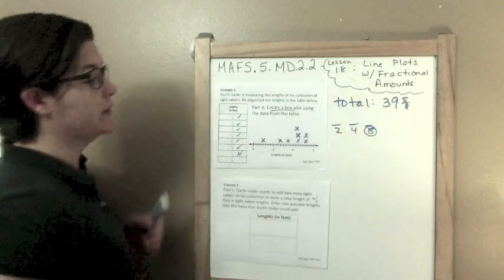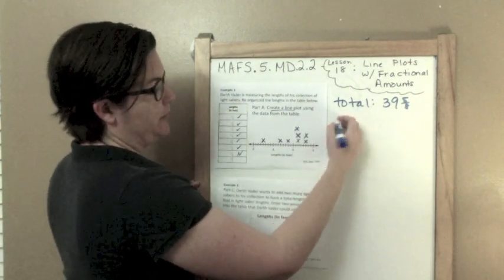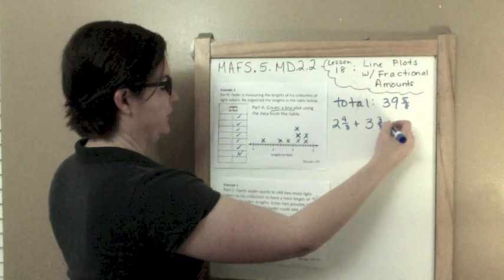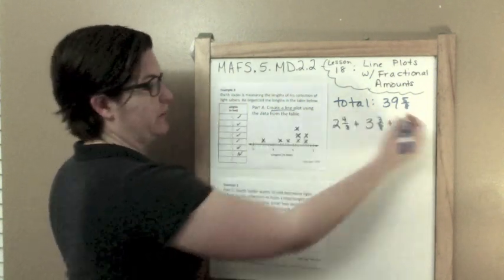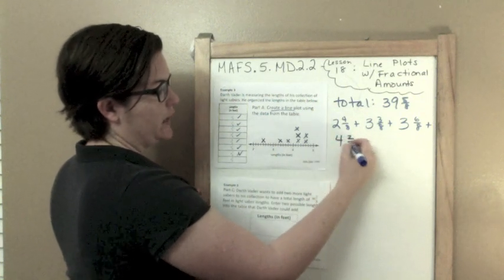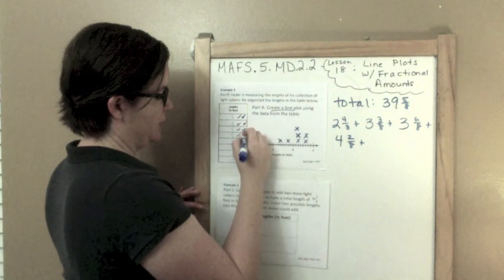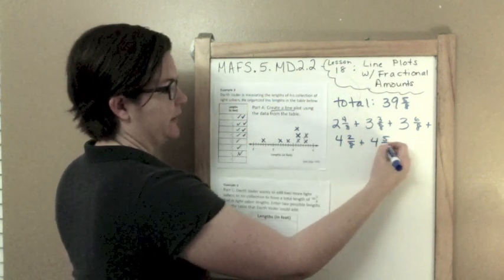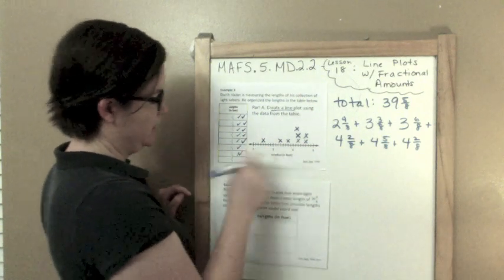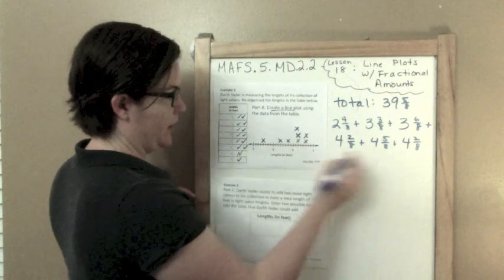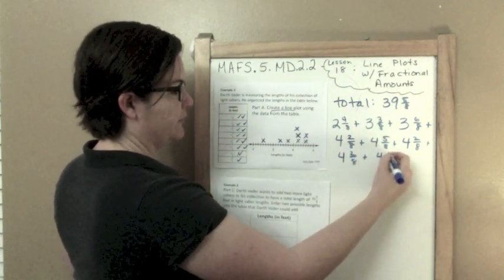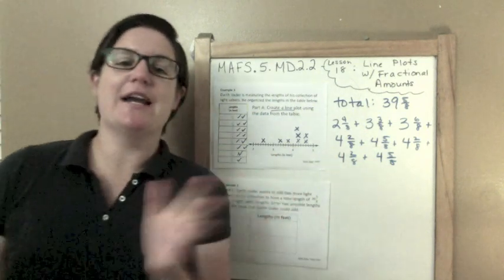What I'm going to do is add them up, but I'm going to convert them because these are easy to convert. The largest denominator that we have is 8, and the denominator 2, the denominator 4, and the denominator 8 can all be converted to this denominator of 8. So 2 and a half could be written as 2 and 4 eighths plus 3 and 3 eighths plus 3 and 3 fourths, I'm going to convert that to 3 and 6 eighths plus 4 and 1 fourth could be written as 4 and 2 eighths.